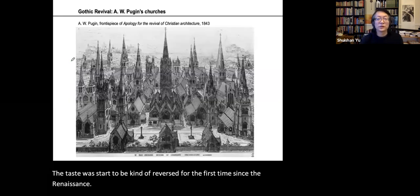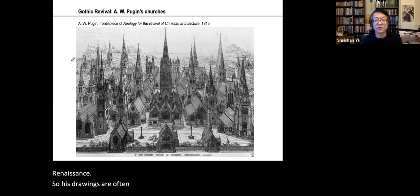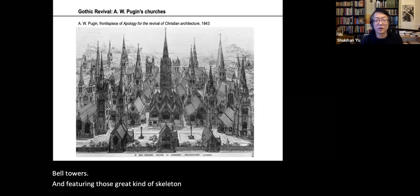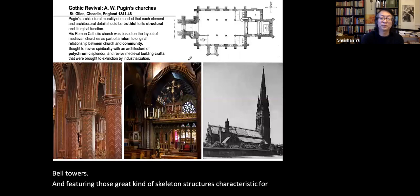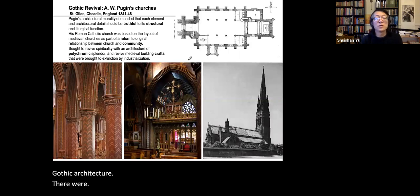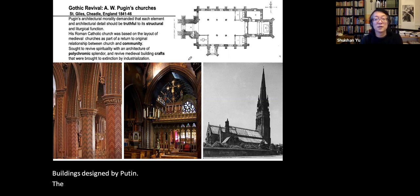Pugin's drawings often feature Gothic elements — tall bell towers and those great skeleton structures characteristic of Gothic architecture. There were buildings designed by Pugin, like St. Giles's, where he promoted a certain style and taste. Pugin idealized Gothic in a new light: revival is never a pure revival — it is always combined with a contemporary spirit. For Pugin, Gothic architecture represents the integrated, harmonious coexistence between church and community.